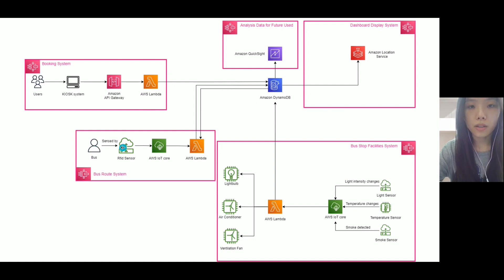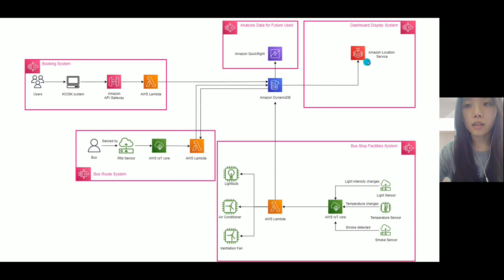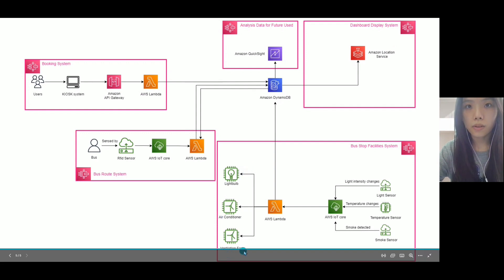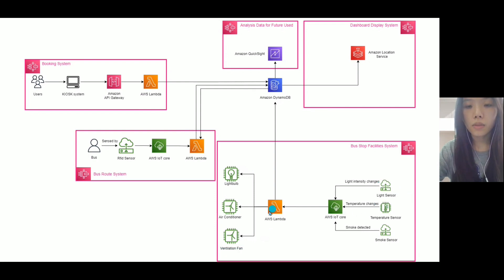Once the bus has reached the bus stop, the RFID sensor will trigger a Lambda function and send the data to Amazon DynamoDB. The data from DynamoDB will be displayed on the dashboard using the Amazon Location Service. We also have three devices in our bus stop, and we use sensors to get the data and use Lambda to trigger the action of those devices.